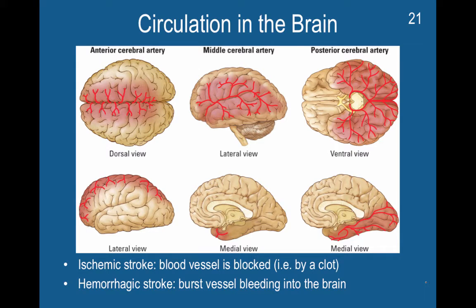There are two types of strokes, which is relevant to one of your writing reflection prompts. You can have an ischemic stroke, in which a blood vessel is blocked — for example, by a clot. You can also have a hemorrhagic stroke, in which a blood vessel bursts and causes bleeding into the brain. In both cases, the affected brain regions stop receiving oxygen.